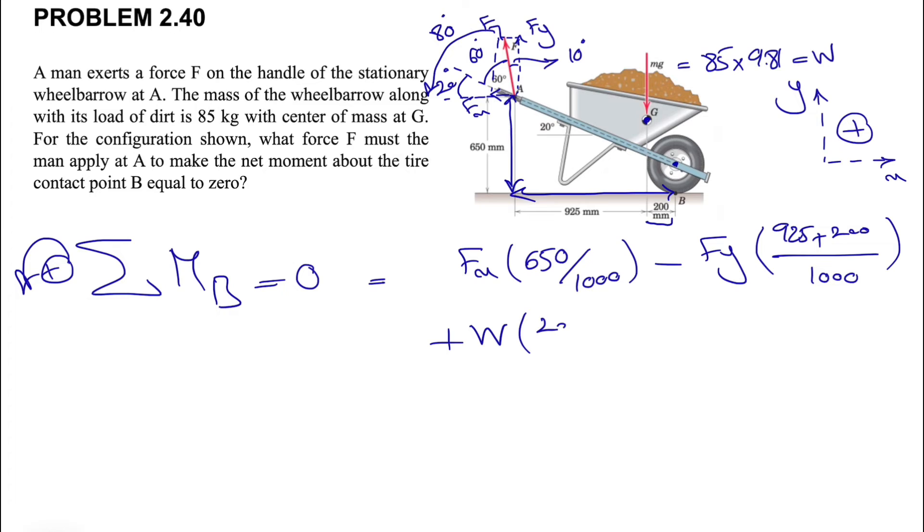Which means we have a positive moment. Simply for the dimension, we have the 200 millimeters that we have here, and again we're going to divide it by a thousand to get it in meters. This needs to be zero, and that's because the question is asking to have the net moment about the tire contact point B equal zero.